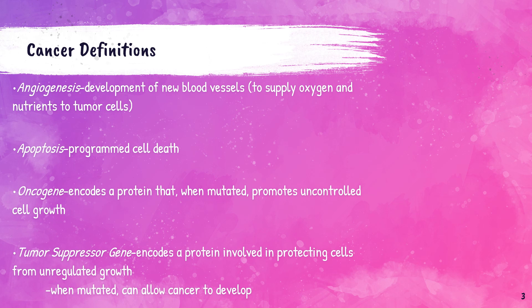This slide shows more terms important to know regarding tumor marker testing. Angiogenesis is the development of new blood vessels, involving the migration, growth, and differentiation of endothelial cells that line the inside wall of blood vessels. This plays a critical role in cancer growth because solid tumors need a blood supply to grow beyond a few millimeters in size. Tumors can cause this blood supply to form by giving off chemical signals that stimulate angiogenesis. Apoptosis is the programmed death of cells, occurring as a normal and controlled part of an organism's growth or development. The loss of apoptotic control allows cancer cells to survive longer and gives more time for the accumulation of mutations.